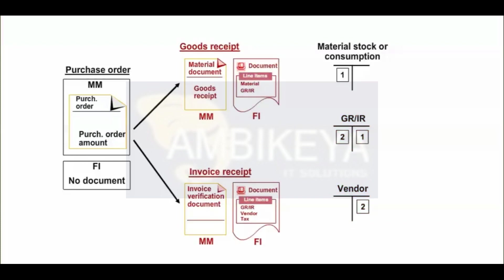The last two steps can be completed in reverse order depending on the order the goods and the invoice are received. The goods receipt/invoice receipt clearing account ensures that goods were received for each invoice and vice versa.